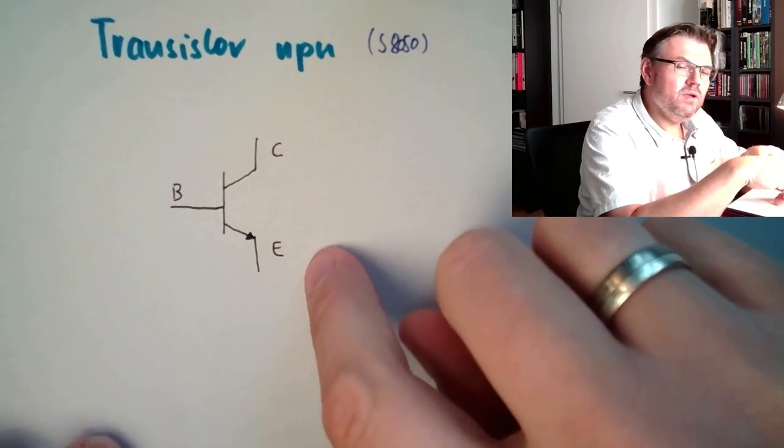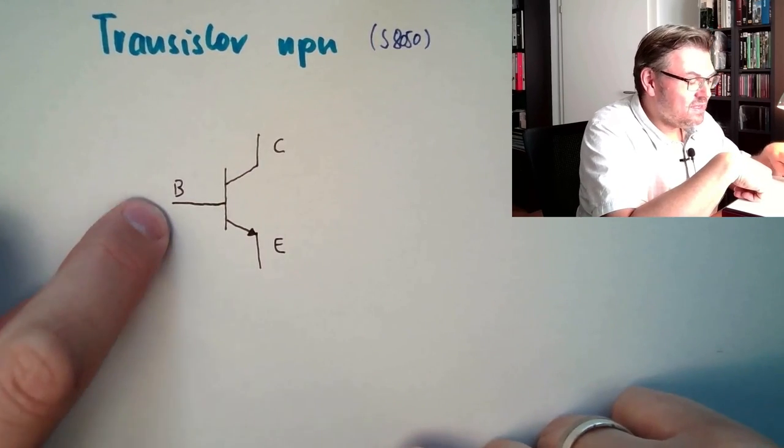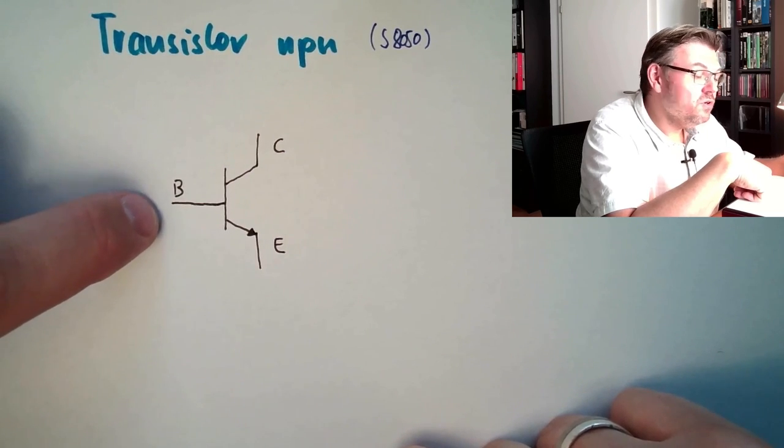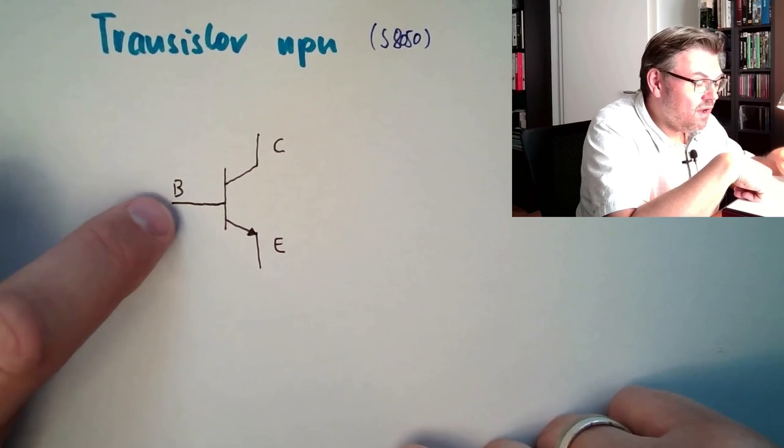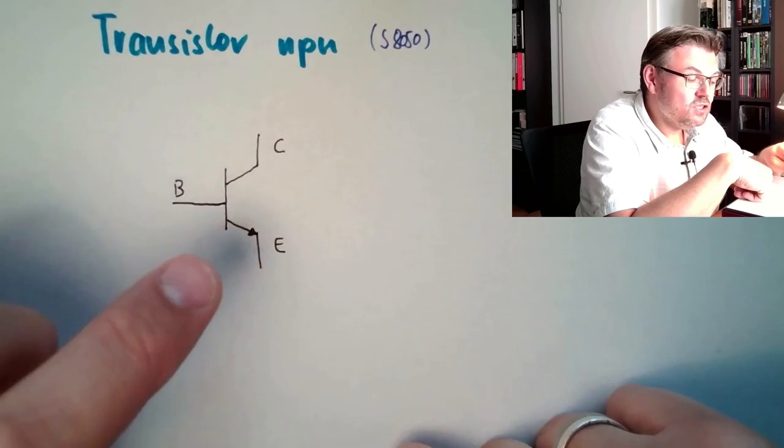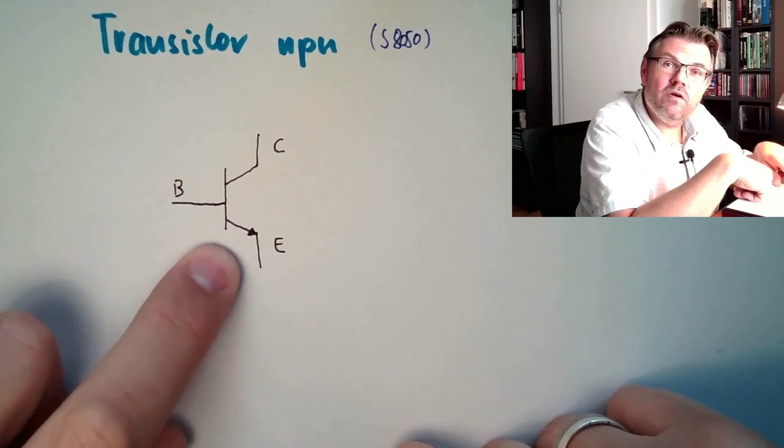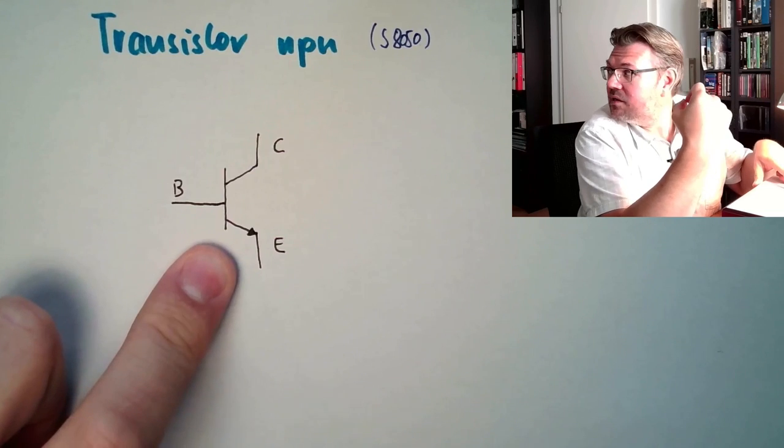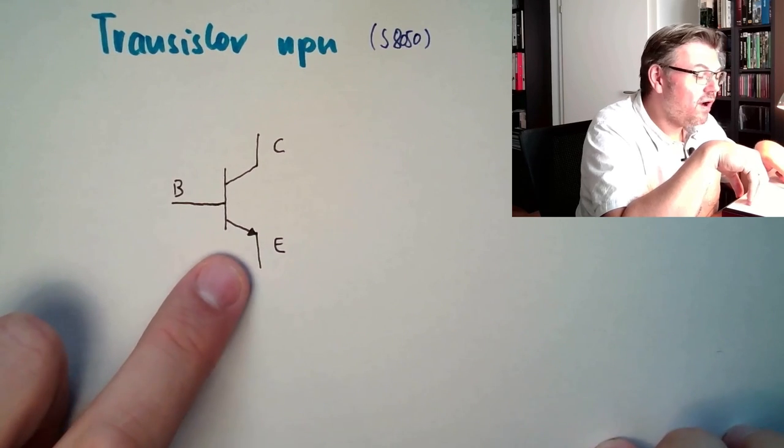Usually, from collector to emitter, there is not any current running. So this is blocked. Unless at base, we give enough current in. So if we are rising the base to a certain level, voltage level above emitter, then enough current is running in. And suddenly this is switching. Suddenly between C and E also current can flow. So this is enough.